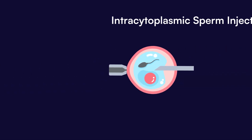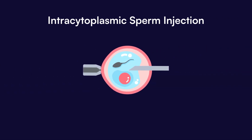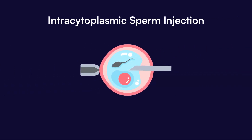ICSI — intracytoplasmic sperm injection. This procedure is used predominantly for severe cases of male infertility where sperm motility or count is extremely low.